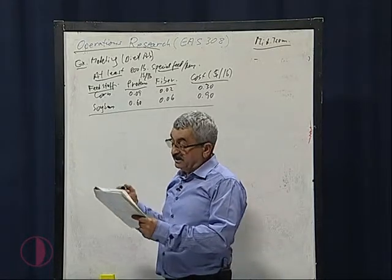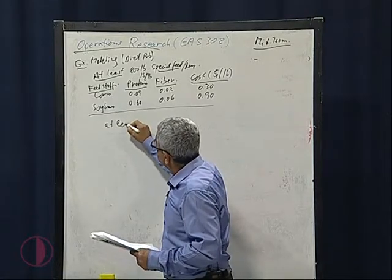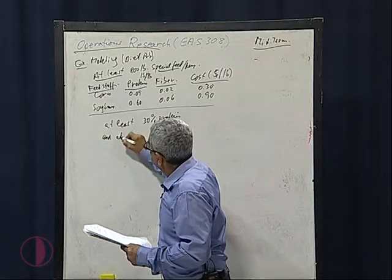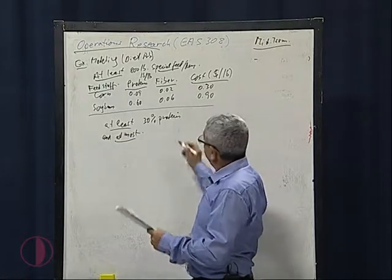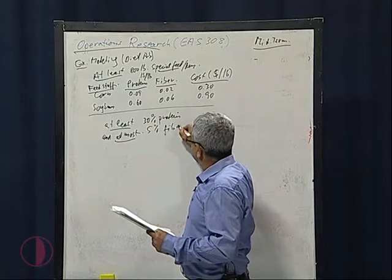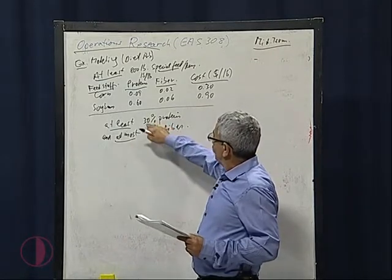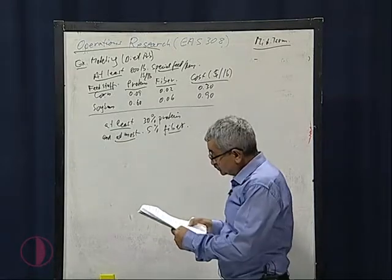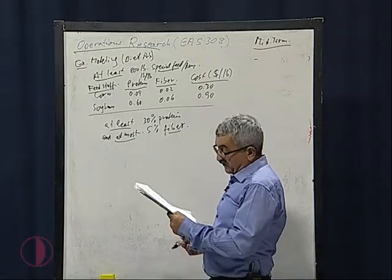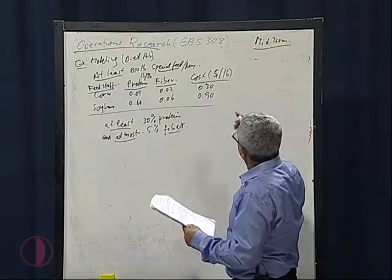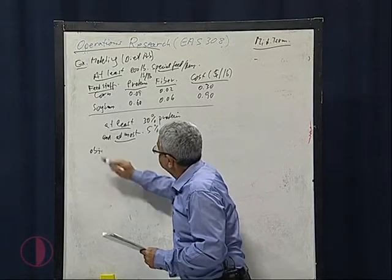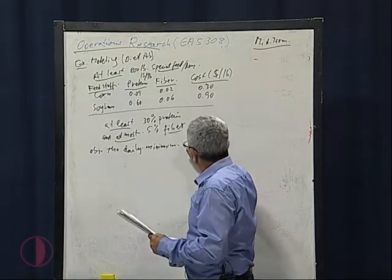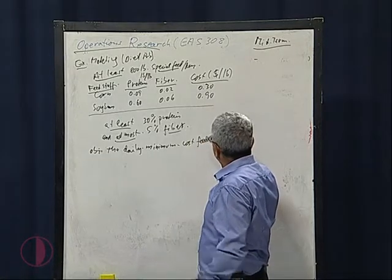At the exam you will see this kind of problem. The data requirements state that the special feed must contain at least 30 percent protein and at most five percent fiber. This means it can contain more than 30 percent protein, but not more than five percent fiber. Our farm objective is to determine the daily minimum cost feed mix.